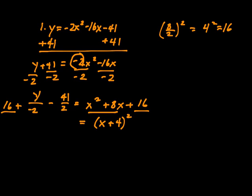Now, we have to take care of this business over here. Y divided by negative 2, there's nothing we can do. But look here, 16 and negative 41 over 2. So let's go ahead and add them. I'm going to put them right next to each other.